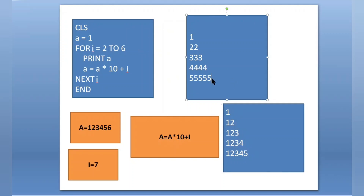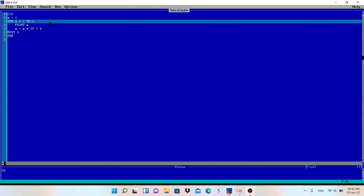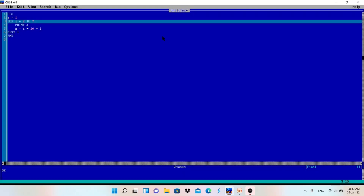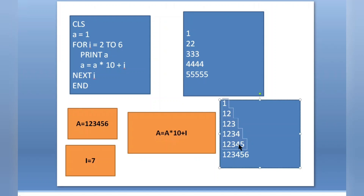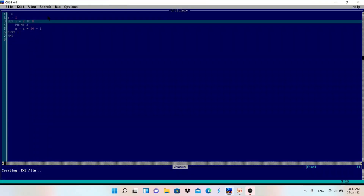Now let me check with another example. I want to print up to 123456 as well. This is our pattern printing program. We are printing 6 rows, so I will just change the range from 2 TO 7. Look — 1, 12, 123, 1234, 12345, 123456 is printed. And if you want to print a pattern up to 1234567 also, you can just change the range to 2 TO 8 and it will print that pattern as well.